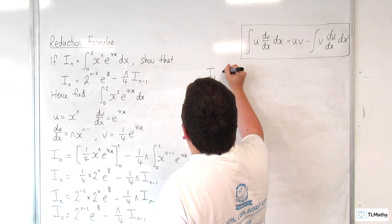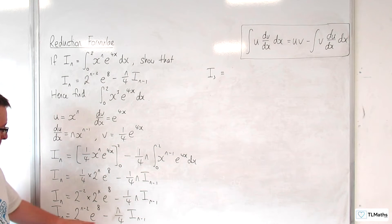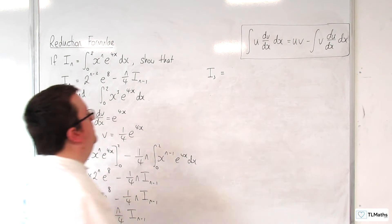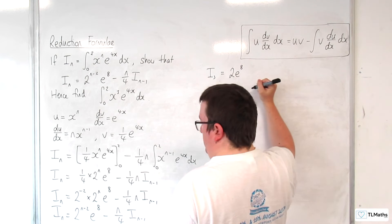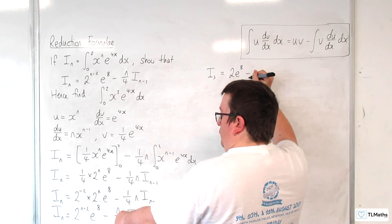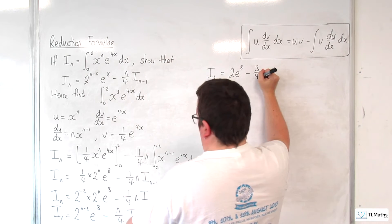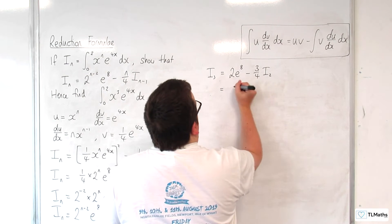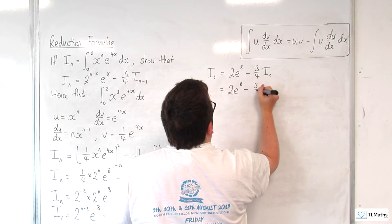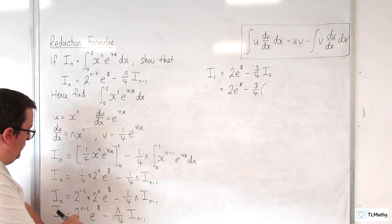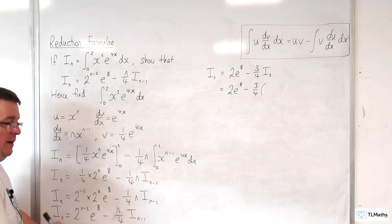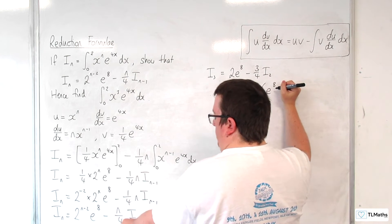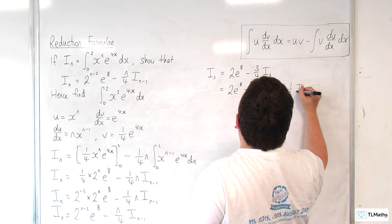So now, hence find the integral between 0 and 2 of x cubed e to the 4x dx — so n is 3, meaning we're looking at I3. Substituting in: I3 equals 2 to the power of 3 minus 2, which is 2 to the power of 1, so 2 times e to the 8, take away 3 quarters of I2. Substituting in n equals 2 for I2: 2 to the power of 2 minus 2 is 2 to the power of 0, which is 1, so we get e to the 8. Then take away 2 over 4, so 1 half of I1.